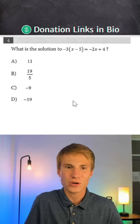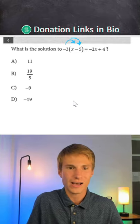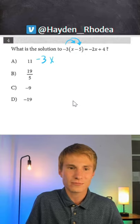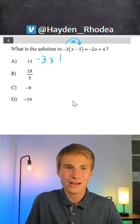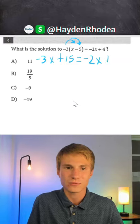So the first thing we want to do here is go ahead and distribute our negative three to our x and then also to our negative five. When we do that, we're going to be left with negative three x, and then negative three times negative five will give us plus 15 is equal to negative two x plus four.